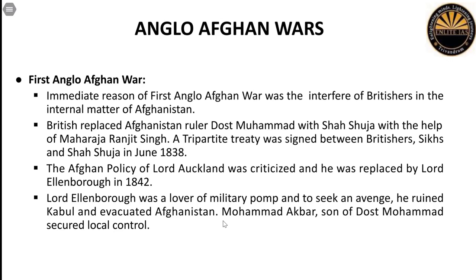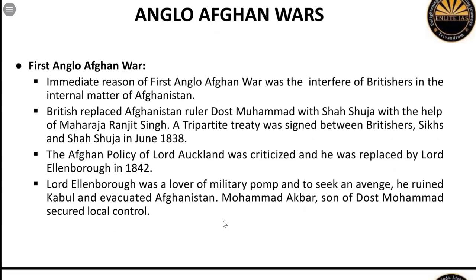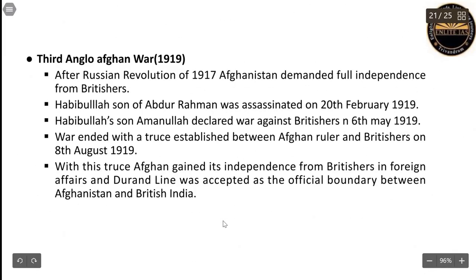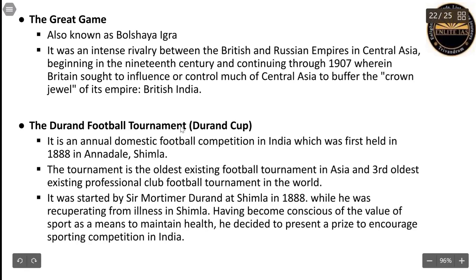The 'Great Game,' also known as Bolshaya Igra, was the intense rivalry between the British and Russian Empires in Central Asia, beginning in the 19th century and continuing through 1907. It was basically a contest to bring much of Central Asia under influence or control in order to buffer the crown jewel of the British Empire — British India.